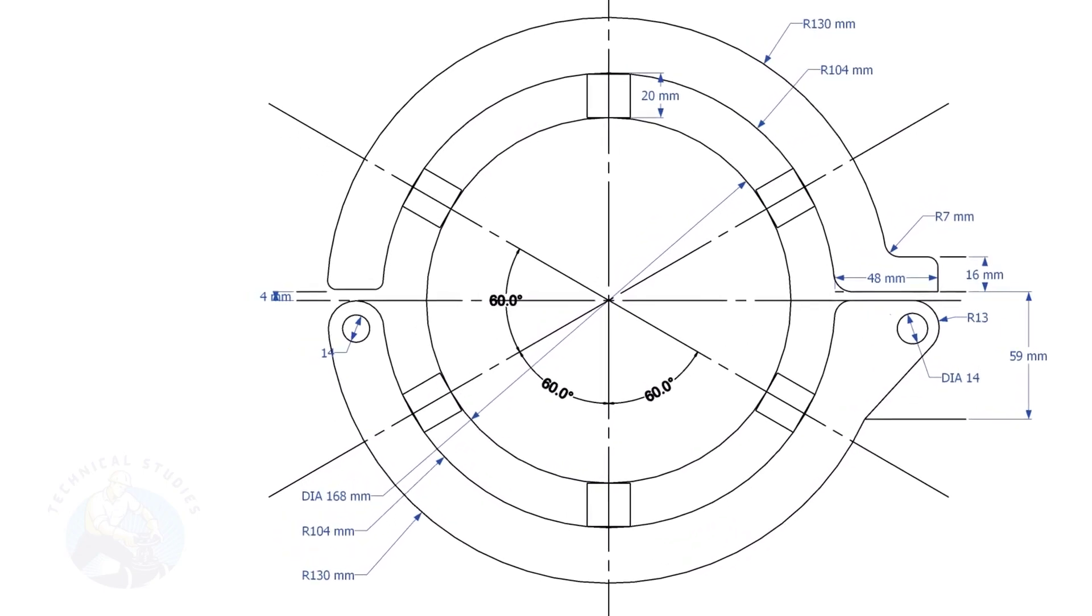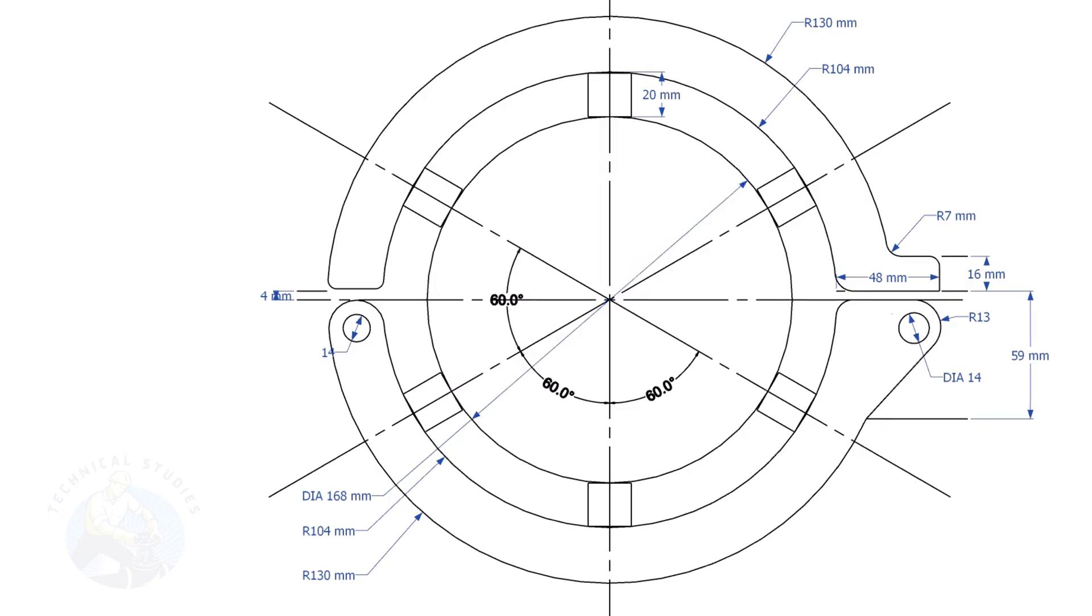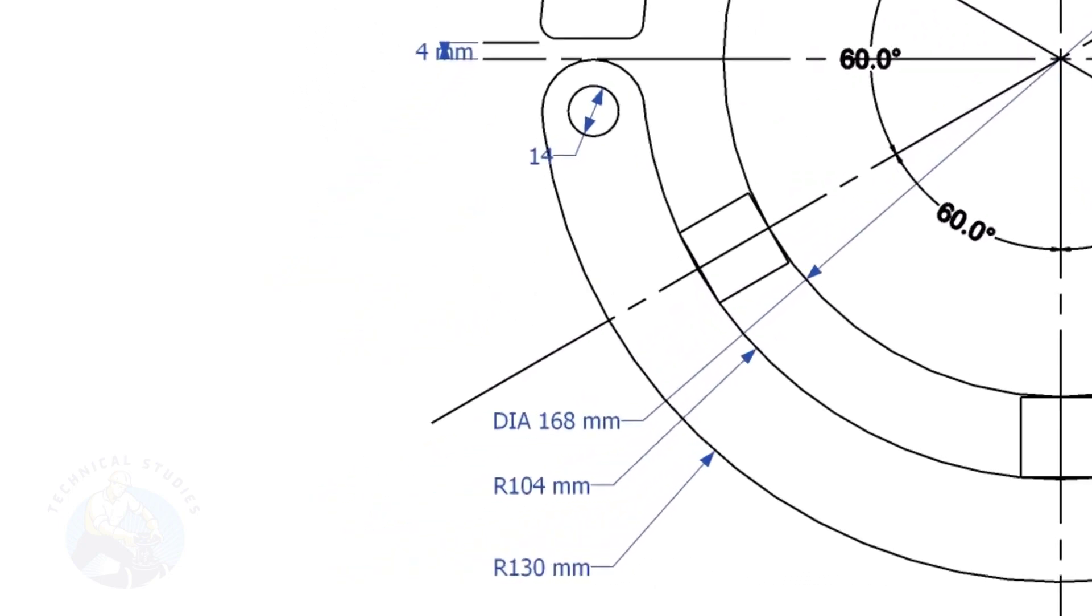This layout is for a 6-inch diameter pipe clamp. Draw the center lines and draw a circle of diameter 168 millimeters, that is the OD of the 6-inch pipe. Draw another circle, the radius shall be 20 millimeters more than the previous circle. This circle is the inside diameter of the clamp.